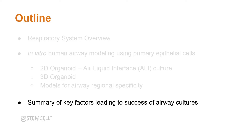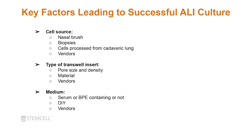Now let's go over a summary of the key factors leading to success of airway cultures, keeping in mind regional specificity and 3D versus 2D organoid systems. The cell source is one key factor — whether getting cells from a nasal brush, biopsy, or cadaveric lung, and from which vendor — as cells may react differently, growing faster or slower. For example, cells from a nasal brush yield very few cells and may require more population doublings to cover a culture dish, so passage numbers may differ depending on source.